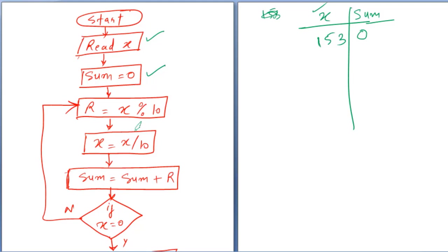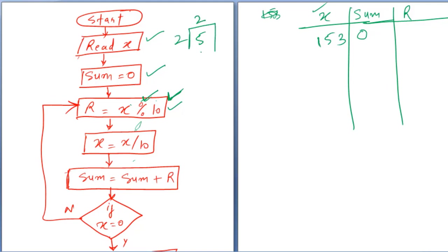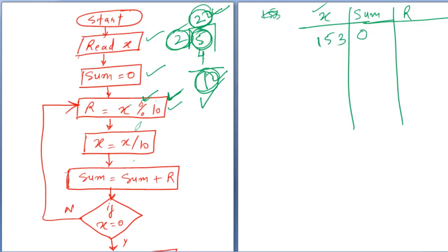R is the third variable I am using. I will write R here. I have assigned x percent 10 to R. What is percent? Percent means remainder. For example, to find the remainder of 5 divided by 2: 2 times 2 is 4, and 5 minus 4 is 1. So 2 is the quotient and 1 is the remainder. So x percent 10 gives us the remainder when x is divided by 10.